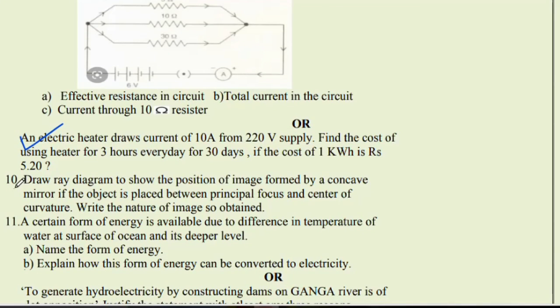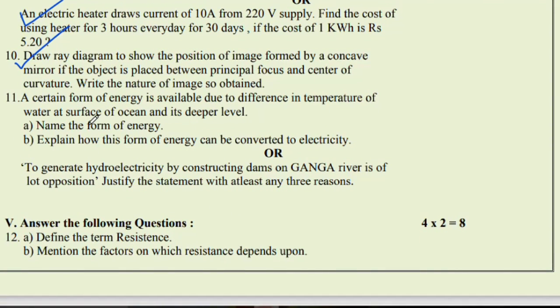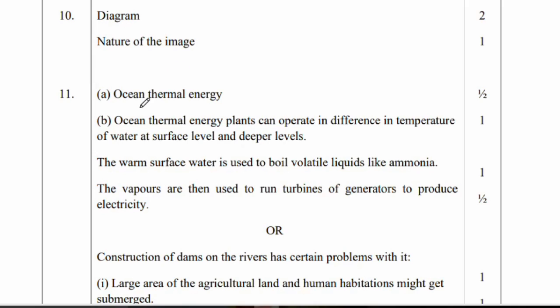Question number 11: A certain form of energy is available due to the difference in temperature of water at the surface of ocean and its deeper level. Name the form of energy and explain how this form of energy can be converted into electrical energy. Ocean thermal energy is the answer. Ocean thermal energy plants can operate in difference in temperature of water at the surface level and deeper levels. The warm surface water is used to boil volatile liquid like ammonia. The vapors are then used to run turbines of generators to produce electricity.